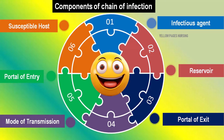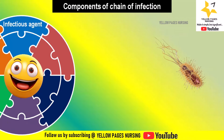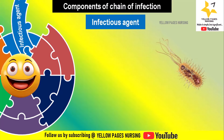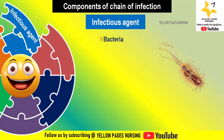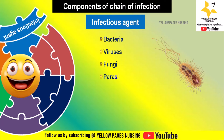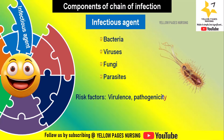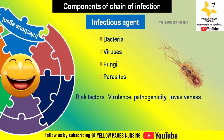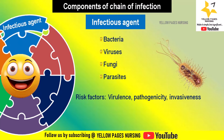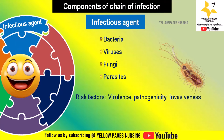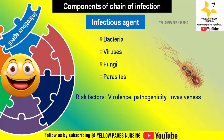First comes the infectious agent. The chain begins with the infectious agent, which can be bacteria, viruses, fungi, or parasites. These pathogens have specific characteristics such as virulence — the ability to multiply and grow — pathogenicity, which is the ability to cause disease, and invasiveness, which is the ability to enter the tissues.